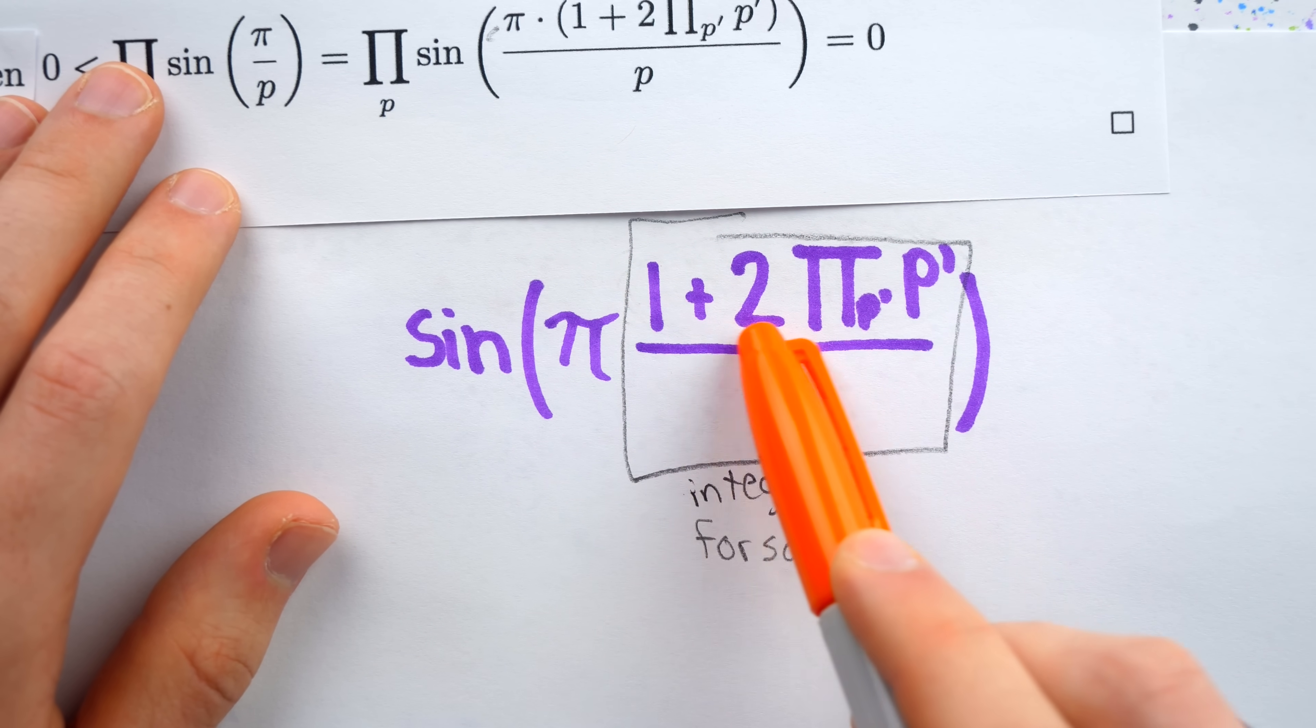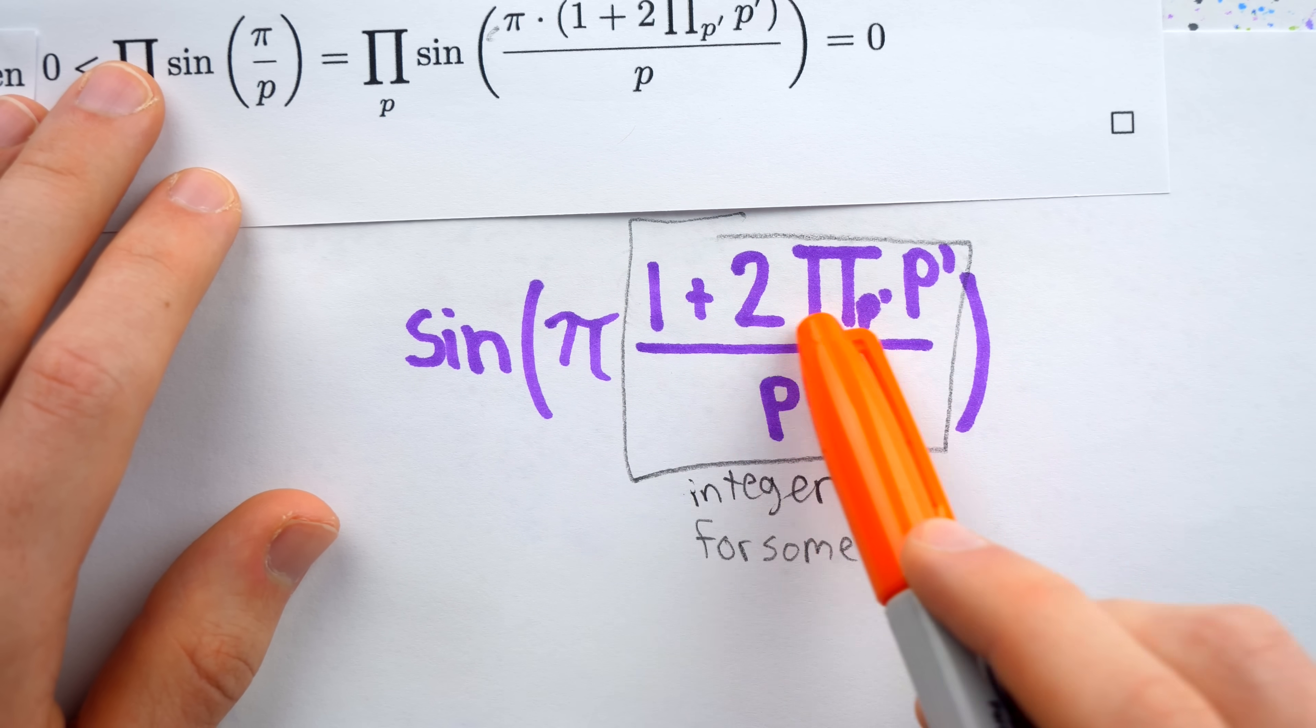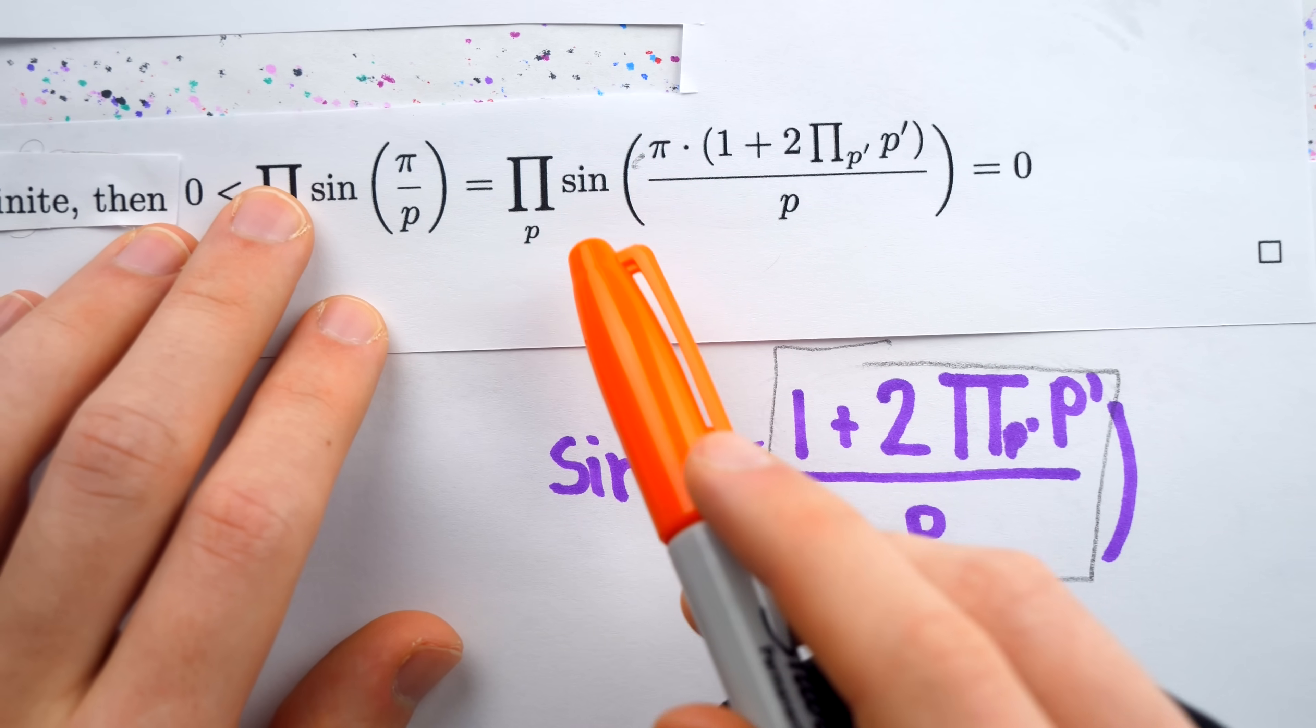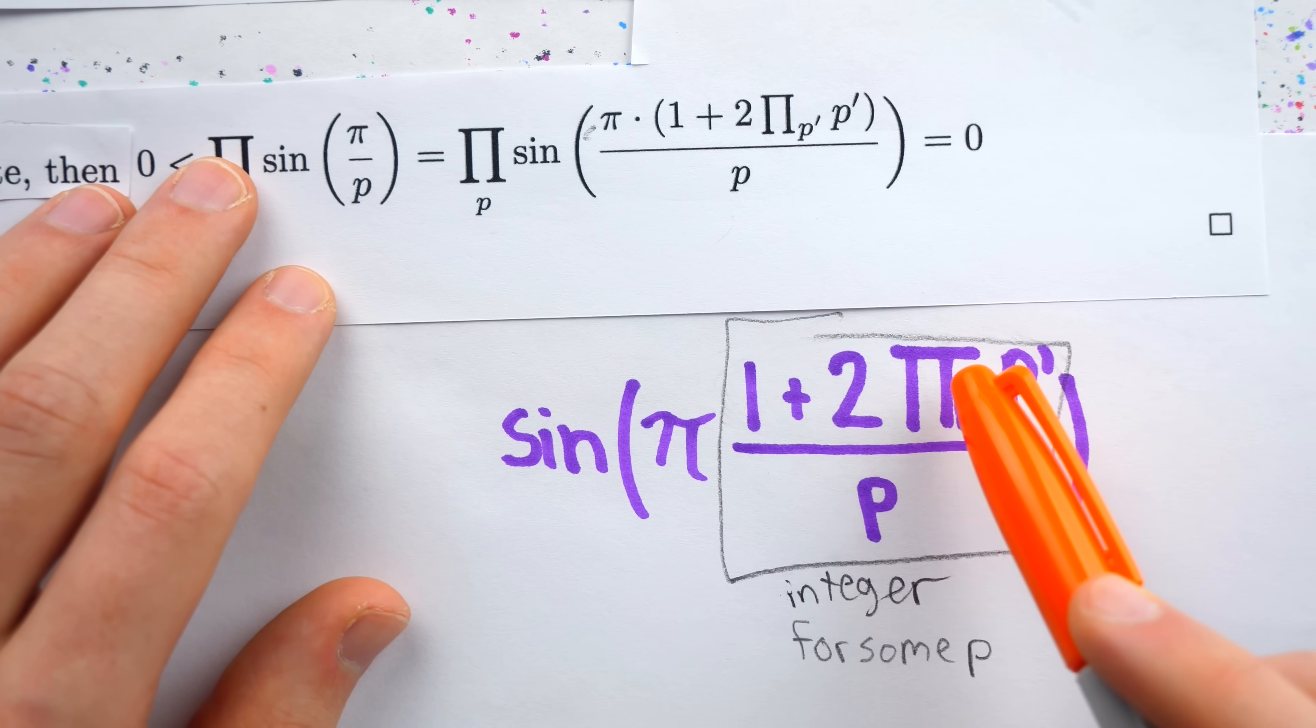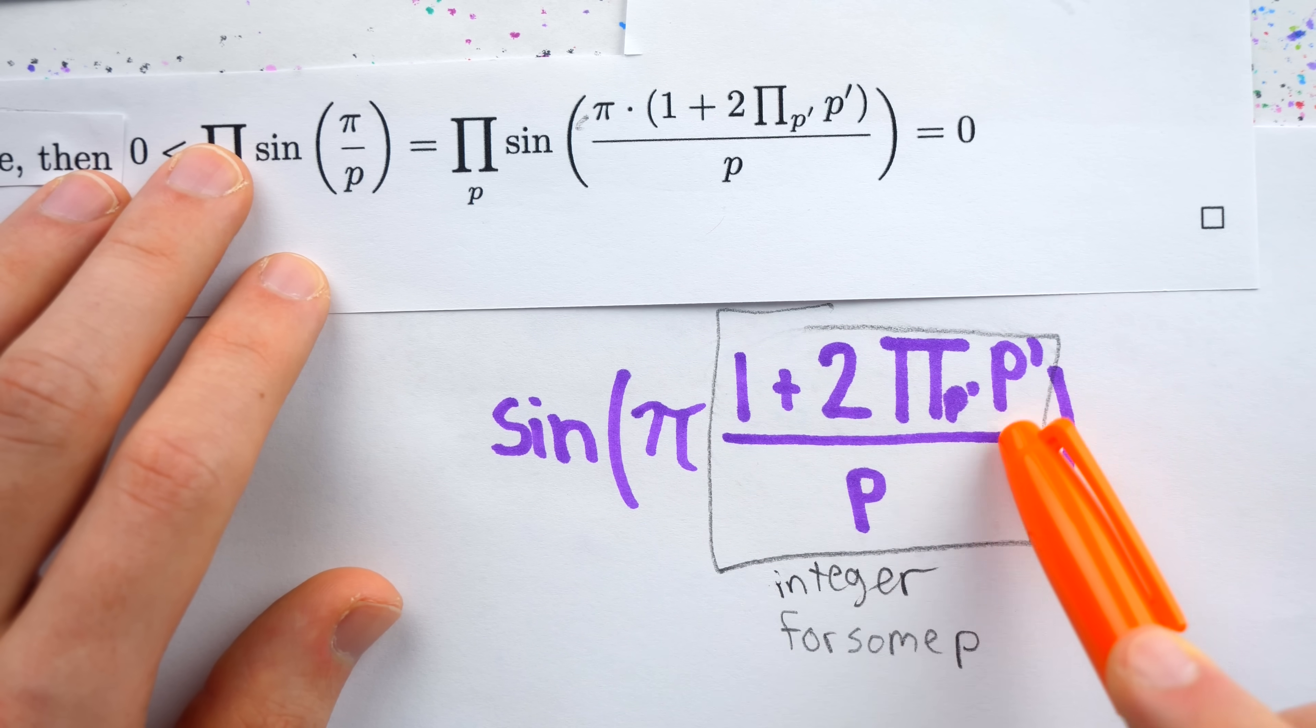It could be that this expression doesn't have 2, for example, as a prime factor. So then the first factor in this product, when p takes on the value of 2, well, then this would not be an integer. But again, the numerator here does have some prime factor.